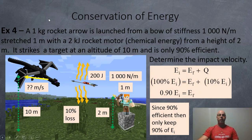So here's a very difficult question right here. So we've got a rocket arrow. So a 1 kilogram rocket arrow is launched from a bow of a stiffness of 1,000 newtons per meter, which has been stretched 1 meter. And it's got a 2 kilojoule rocket motor, which is chemical potential energy. And it's going to be launched from a height of 2 meters. Later, it's going to strike a target at an altitude of 10 meters. And it's only 90% efficient. So I'll find the impact velocity when it hits the target. So here we go. The arrow is 2 meters off the ground. It's in a bow, which has been stretched 1 meter with a stiffness of 1,000 newtons per meter. And then it's got a 200 joule rocket motor. So it's going to be expending that chemical energy as thrust. And there's going to be a 10% loss of energy. So it's only 90% efficient. And it's going to hit its target at a height of 10 meters.